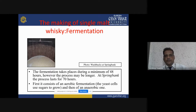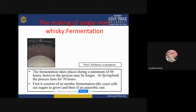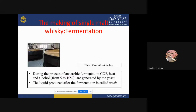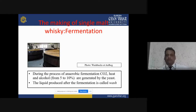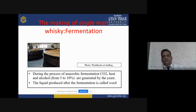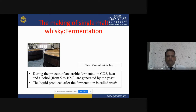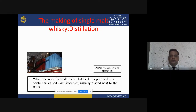The fermentation first consists of aerobic fermentation, where yeast uses sugar to grow. During the process, CO2, heat, and alcohol of 5 to 10 percent are generated by the yeast. The liquid produced after fermentation is called wash. When the wash is ready to be distilled, it is pumped to a container called a wash receiver, usually placed next to the stills.